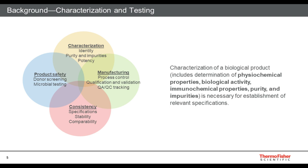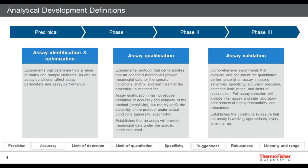I also want to remind you that there's a broader background of characterization — it's not just identity, purity, and potency as we classically think about it. It also includes manufacturing consistency, safety, and which impurities you have. These are really important things to consider as well. Don't get too myopic focusing on identity, purity, and potency. There's more to it. The way I make a recipe in my kitchen might be different from the way you make the same recipe, which is why we need to characterize the whole process as well as the end result.